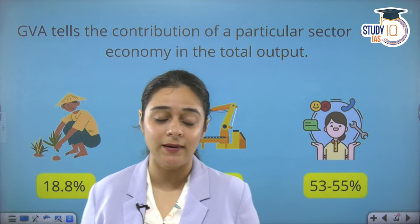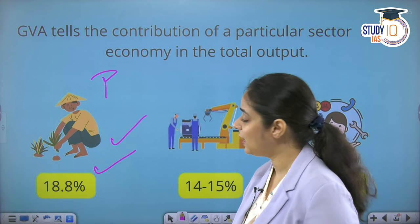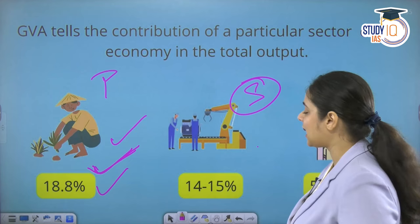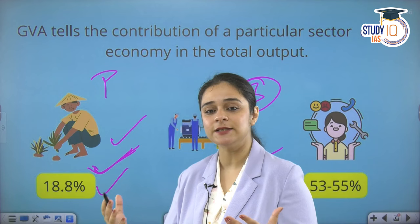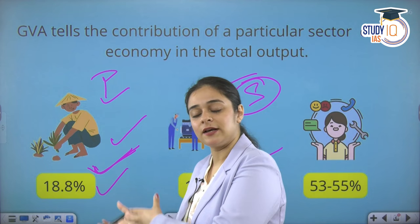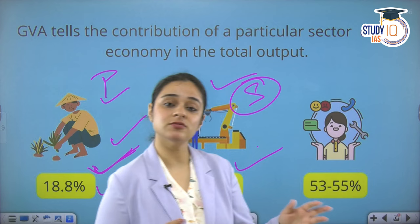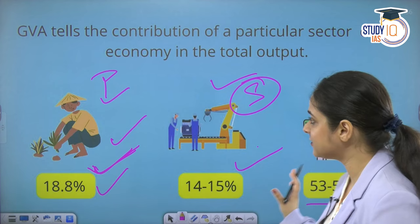GVA also tells us how much value is added by different sectors of the economy. In India, the primary sector contributes around 18.8%. The secondary sector, which is manufacturing, adds around 14 to 15%. The tertiary sector — the service sector, which includes banking, transportation, and other services supporting agriculture and manufacturing — contributes the most value addition to the economy.